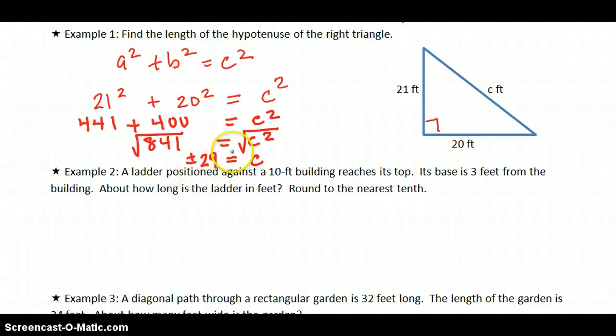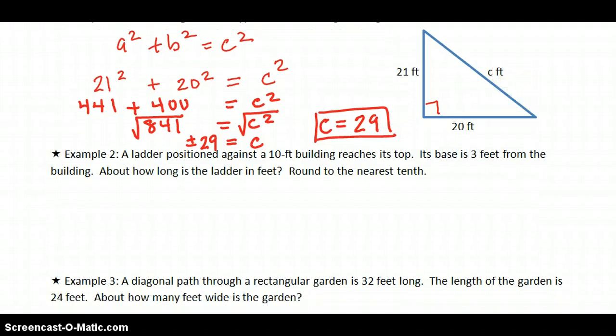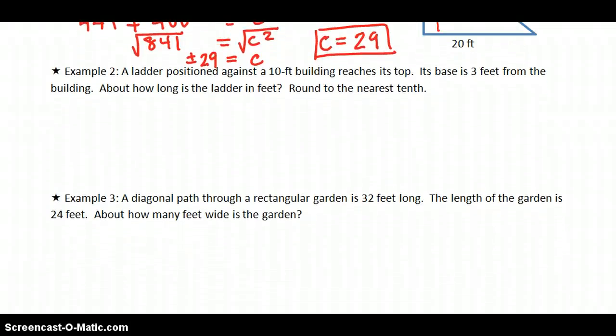Now, positive or negative, because we did not know C, but we are doing a geometry problem where we're looking for the length of a side in feet. So I can throw out the negative and with confidence say that C must be the positive 29, because you cannot have a negative measurement. Let's look at this next problem.